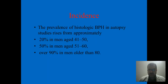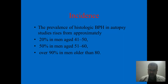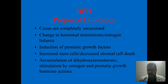The prevalence of histological benign prostatic hyperplasia in autopsy studies rises from approximately 20% in men aged 41 to 50, to around 50% in men aged 51 to 60, and more than 90% of men older than 80 years old will have benign prostatic hyperplasia. What is the etiology of this disease?